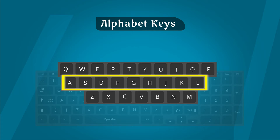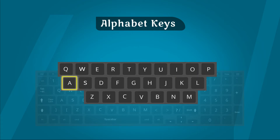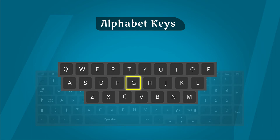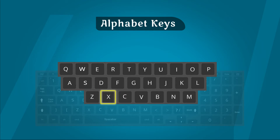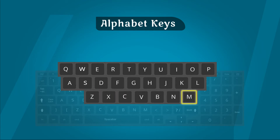Second row: A, S, D, F, G, H, J, K, L — nine letters. Third row: Z, X, C, V, B, N, M — seven letters.